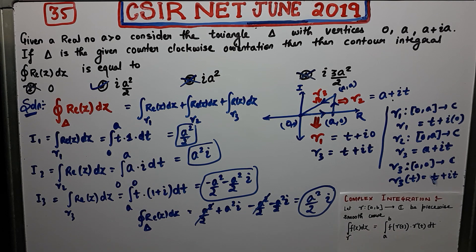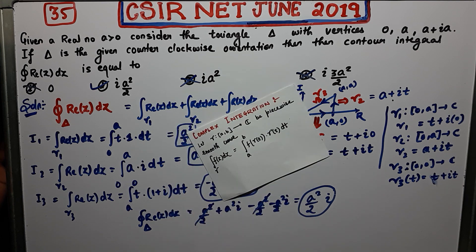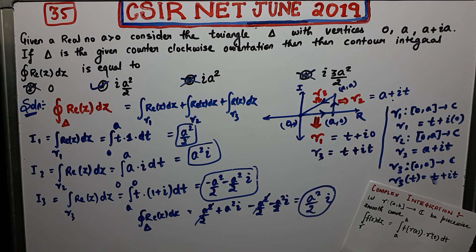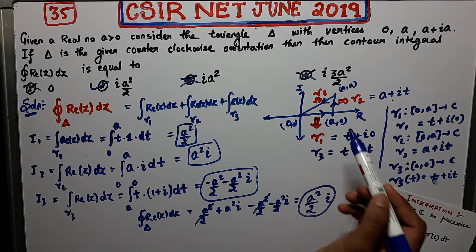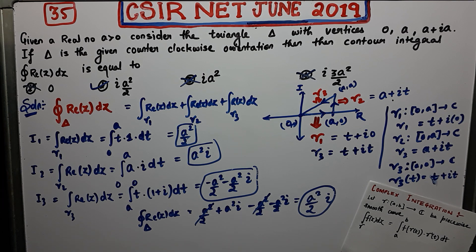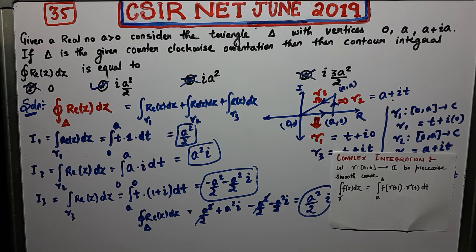Your answer is ia²/2, which is the second option — all other options are false. To summarize: I used the definition of the complex line integral. You divide the given contour into three separate parts, parametrize each one, and then evaluate using the formula. This is a very easy question — you just need to understand how complex integration over a contour works. Thank you guys.